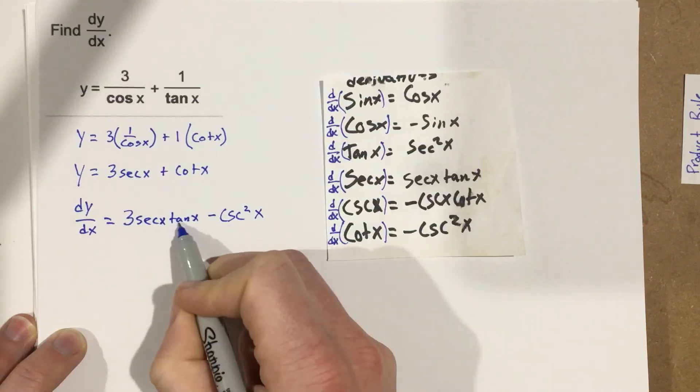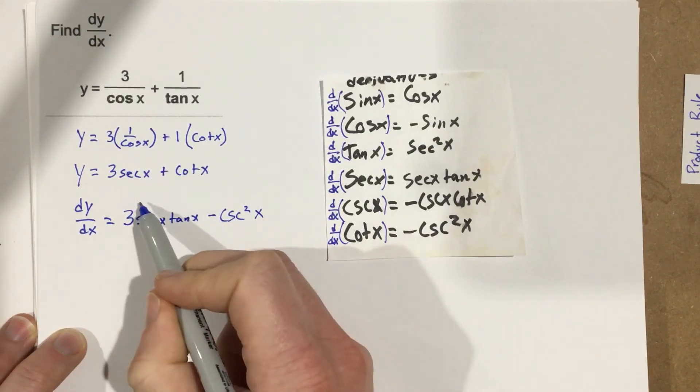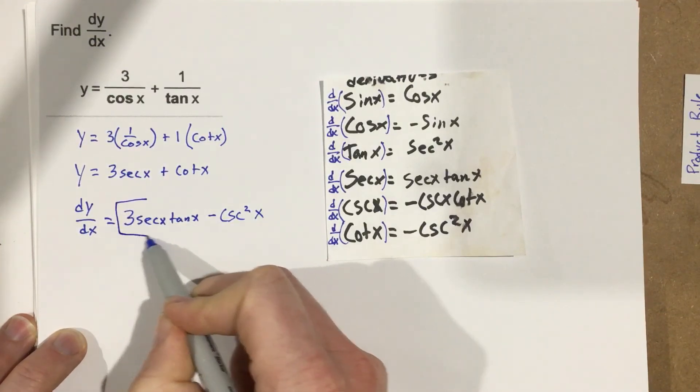And tangent is sine over cosine, and secant is 1 over cosine. So, this isn't going to simplify at all. This is our derivative for the original function.